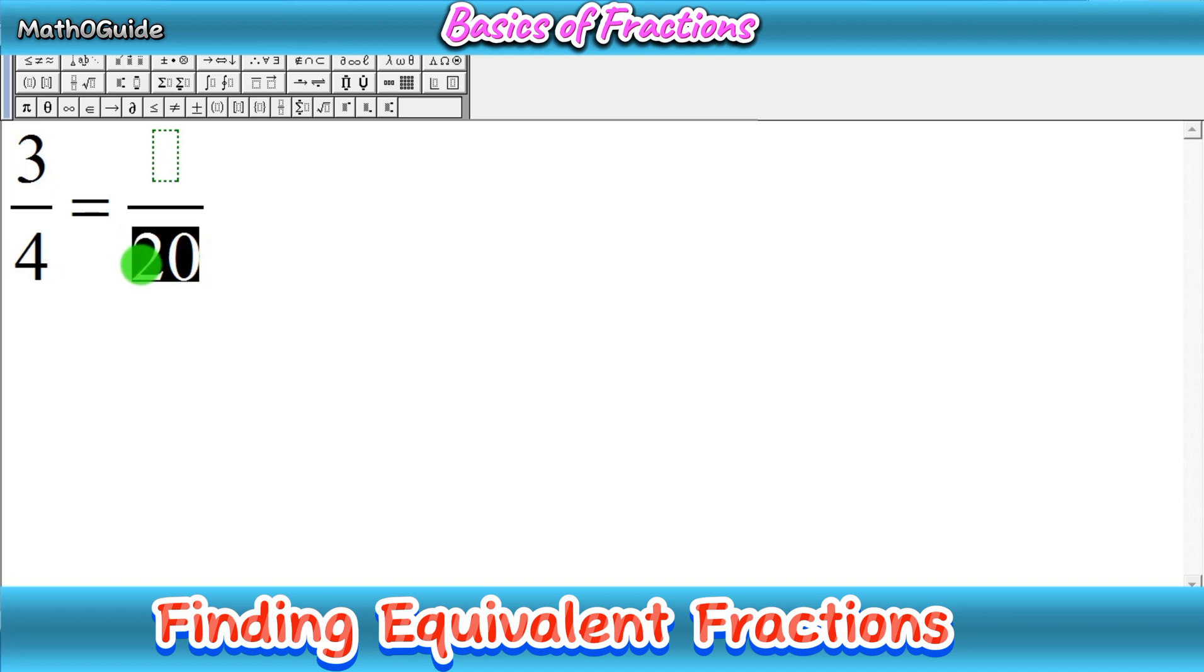First of all you have to check what number should be multiplied with this 4 to get 20. Simply you have to multiply this denominator, this 4, with any number that we can get 20. As you know that 4 times 5 is 20, so simply you have to write here 5.